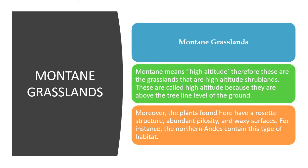Mountain grasslands are found at very high altitude shrublands — they are above the tree line level of the ground. Where the trees stop growing at higher mountain ranges, there comes an area full of grassland with an absence of trees. The plants found here have a rosette structure, abundant pilosity, and waxy surfaces. For instance, the northern Andes contain this type of habitat. It is a very beautiful type of grassland ecosystem, with plants adapted to the high altitude and climatic conditions supporting the growth of such grasslands.